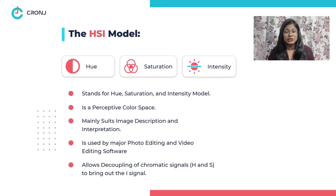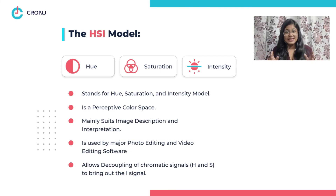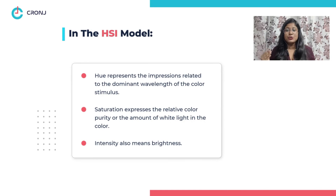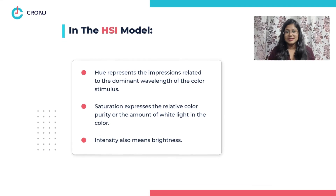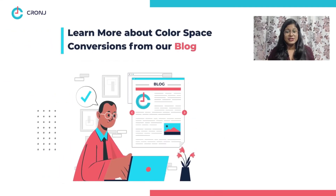HSI, or the Hue, Saturation, and Intensity model, is a perceptive color space that mainly suits image description and interpretation. It is used by major photo editing and video editing software like Adobe Lightroom, Photoshop, and more. It allows decoupling of H and S — which are chromatic signals — to bring out intensity, or the I signal. In the HSI model, hue represents the impression related to the dominant wavelength of the color stimulus, saturation expresses the relative color purity or the amount of white light in the color, and intensity also means brightness.